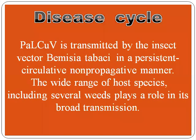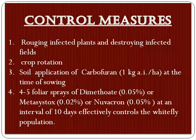When it comes to the disease cycle, this leaf curl virus is transmitted by the insect vector Bemisia tabaci in a persistent, circulative, non-propagative manner. The wide range of host species including several weeds plays a role in its broad transmission.